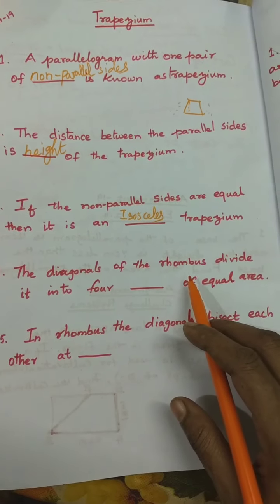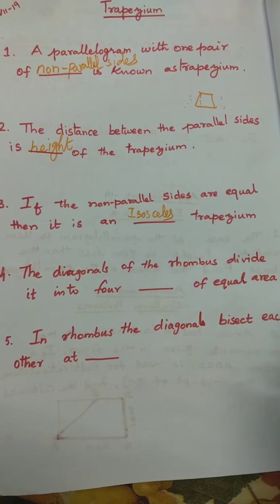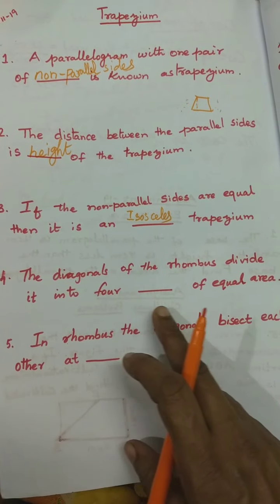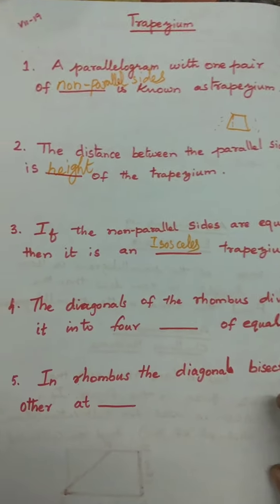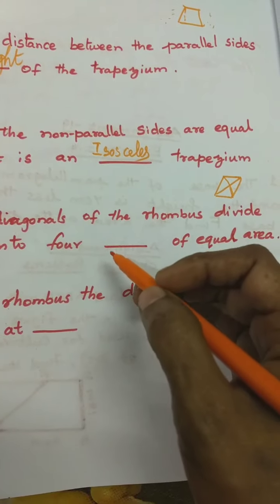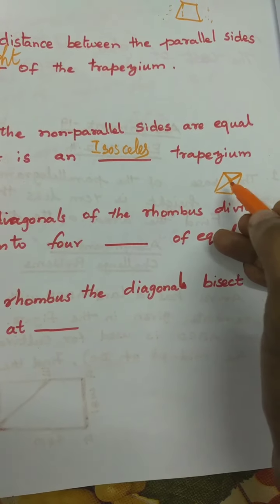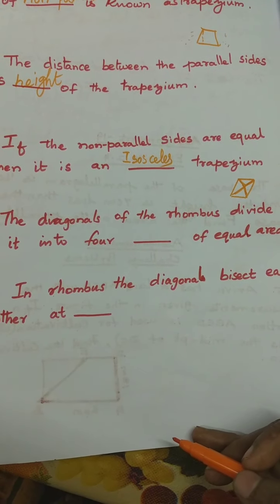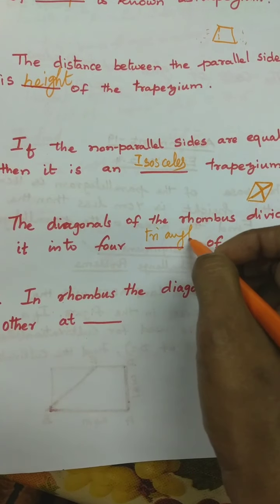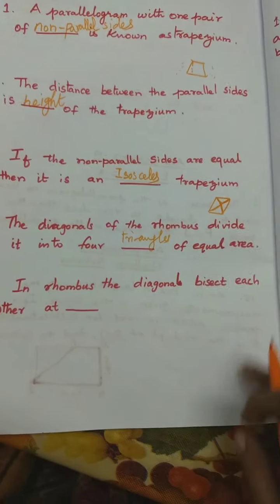The diagonals of the rhombus divide it into four triangles of equal area.